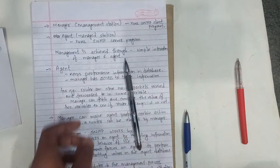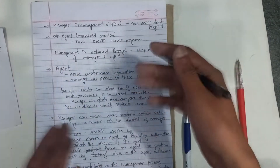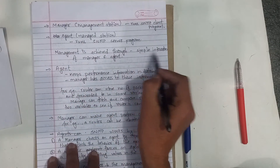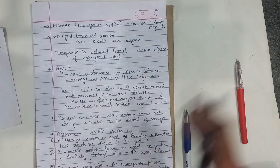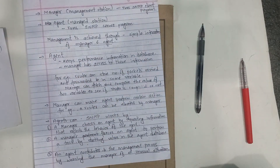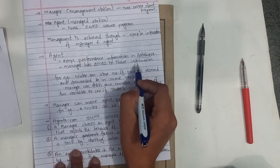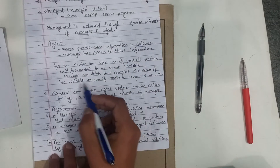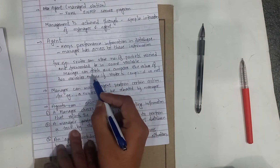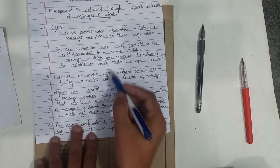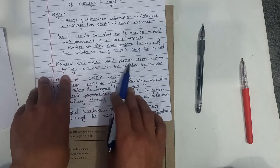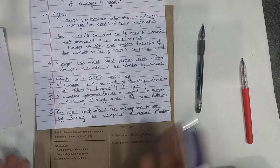The agent managed station runs the SNMP server program. The client sends requests. Management is achieved through simple interaction of manager and agent. The agent keeps performance information in a database. For example, a router can store the number of packets received and forwarded in variables. The manager can also make the agent perform certain actions — for example, a router can be rebooted by the manager.